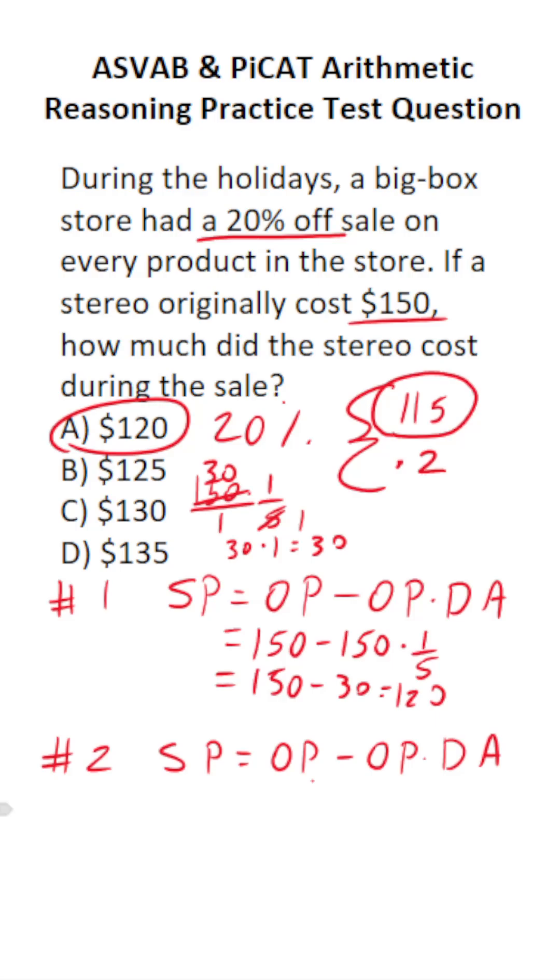All right, so our answer is 120. Let's look at the second method. So again, our original price is 150 minus 150, and the discount amount in this case, we're going to use the decimal equivalent, notably 0.2. So now we have to do 150 times 0.2. We've got to move this decimal one place to the right to make this 150 times 2, albeit with one decimal to move back to the left when we're done.